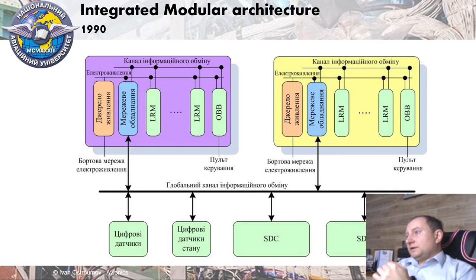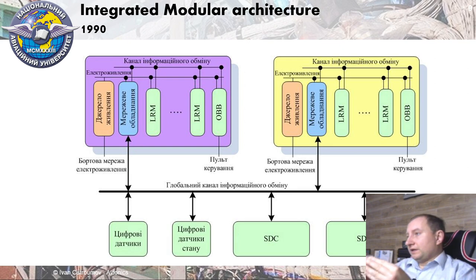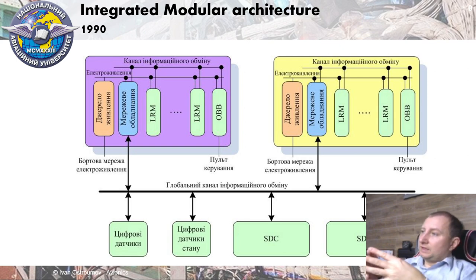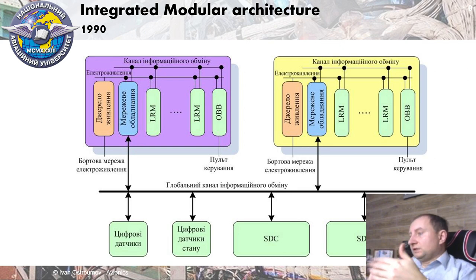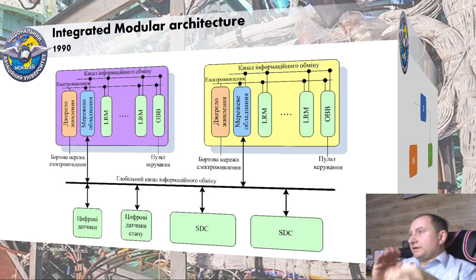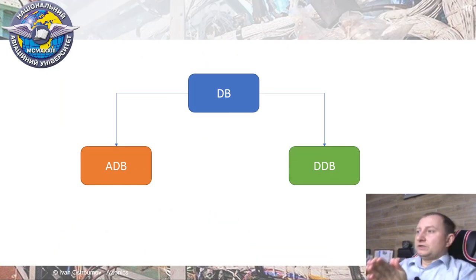Today we can also talk about integrated modular architecture. Some federations have been developed to the level of an integrated rack. Inside the integrated rack we have a local network as in a federation, however it is not a federation of LRUs — it is an integrated rack with line replaceable modules performing data exchange within this local network. Network equipment performs multiplexing or switching between the local and global network, providing connection to all sensors and all other integrated racks on board. Integrated modular architecture is our future, though we are still on the way to this avionics technology.